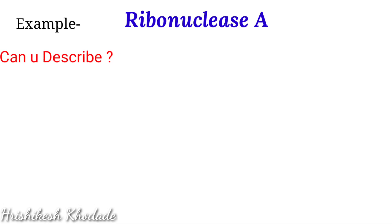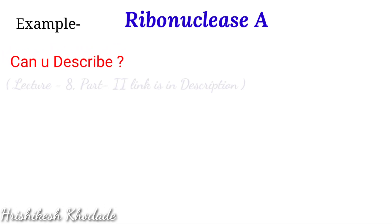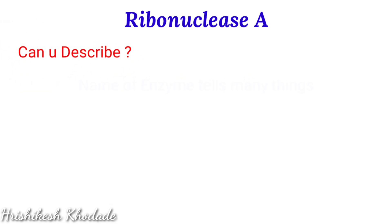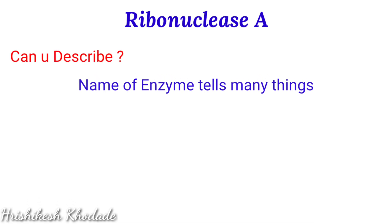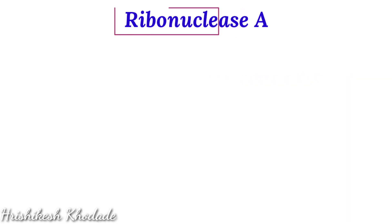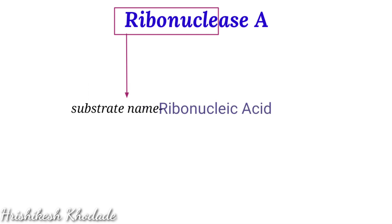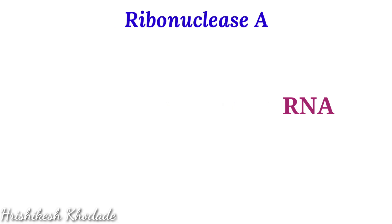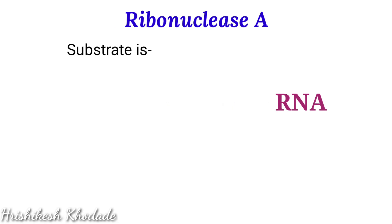I would like you to apply your knowledge from part two of the eighth lecture to describe the name ribonuclease A, because the name of an enzyme says many things. The suffix '-ase' indicates this is an enzyme. This name also indicates that the substrate must be ribonucleic acid, what we call RNA. So now we have information about what the substrate is, which is RNA.